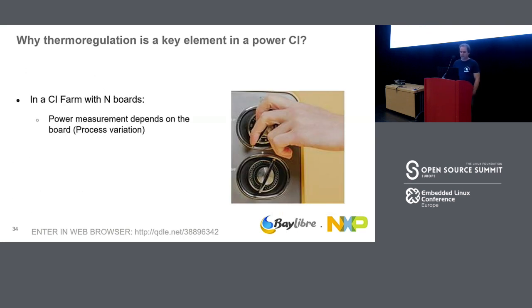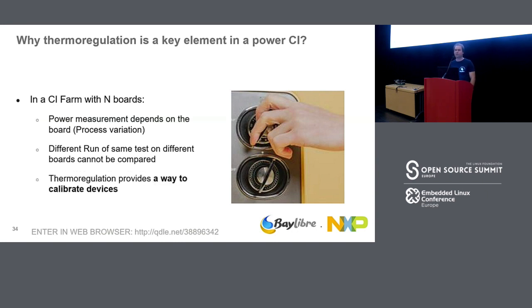Another key benefit: if you have a farm of devices with different silicon processes — which is always the case since you can't control the process, you just get what you get — you can do a calibration phase using temperature as a parameter you can adjust. This allows you to get the same power measurement readings for all boards in your farm by simply adjusting this one parameter.